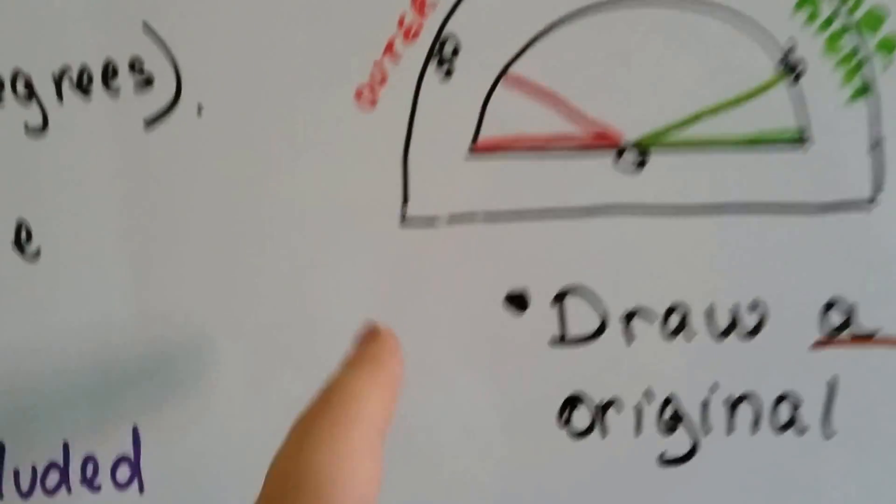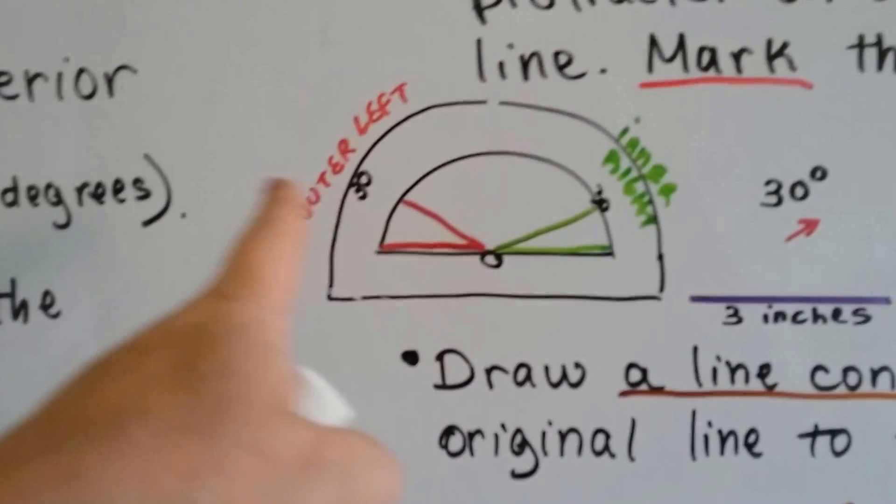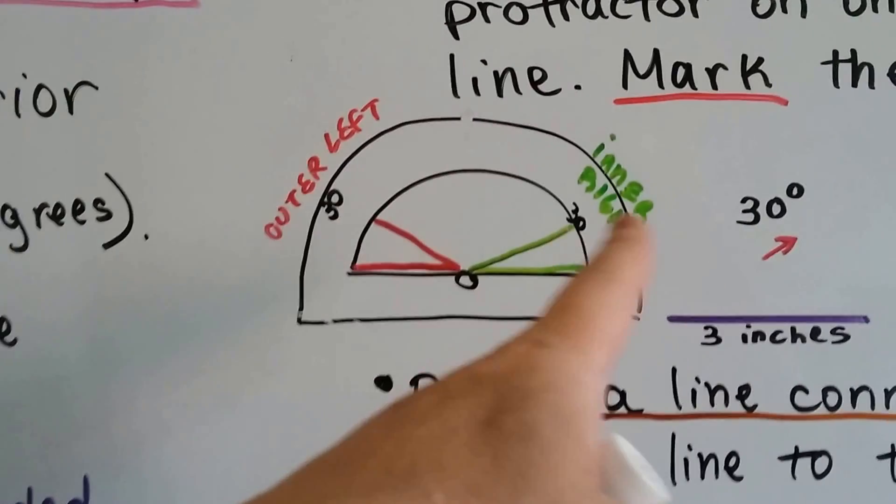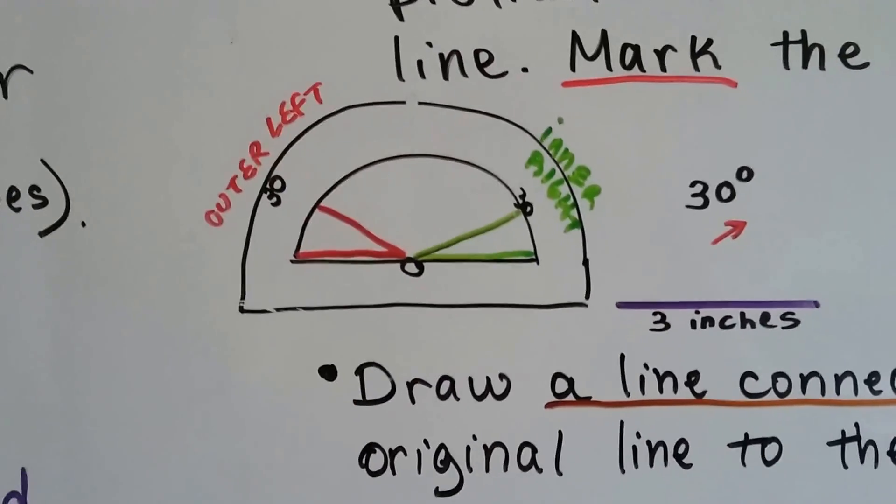So, if your angle is going to open to the left, you use the outer. And if your angle is going to open to the right, you use the inner measure. That's all.